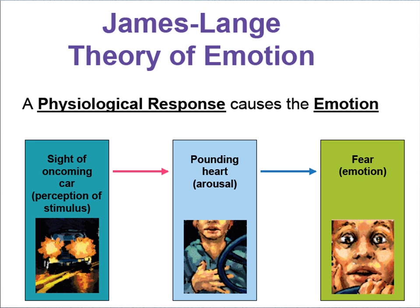Here's how it works: you see a car coming — all of a sudden your arms shake, your blood pressure rises, you breathe heavily (the physiological response) — and then you have the emotion: fear. Another example: you see an attractive person walk into a room, your heart starts beating, and then you think 'I'm nervous.'